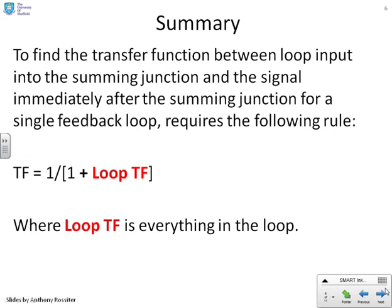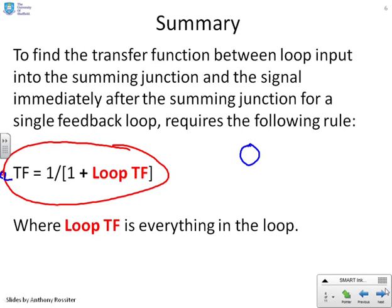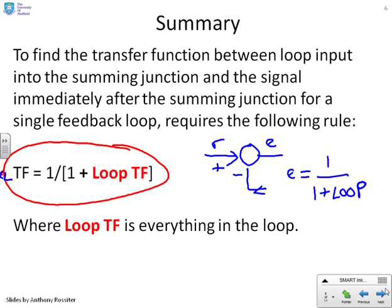Summary: if you want to find the transfer function between the loop input into the summing junction and the signal immediately after the summing junction, for a single feedback loop the closed loop transfer function is 1 over 1 plus the loop transfer function, where the loop transfer function is the product of everything in the loop. You will always get this pattern.